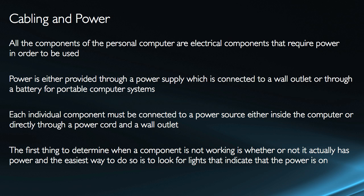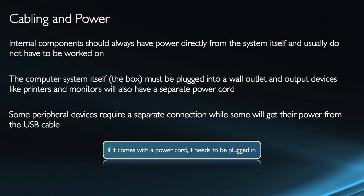The first thing to look for if a component is not working is whether or not it actually has power. The easiest way to do that, without opening up the computer, is: does it have any lights? Most devices come with some sort of LED that will flash or display when the device has power. So that's really the first thing to look for. Internal components should always have power directly from the system itself, and usually these don't need to be worked on.